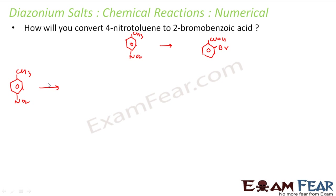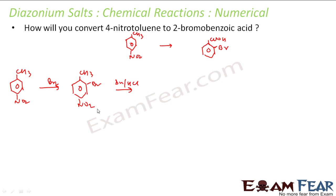So I have CH3 and NO2. First thing: add bromine here. The next target is to remove this NO2. To remove it, I can use Sn/HCl — I can reduce it by adding hydrogen, or I can use H⁺ and tin. What will happen is this will become NH2.